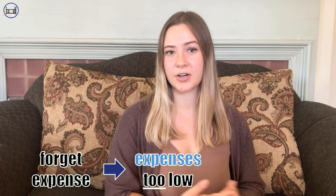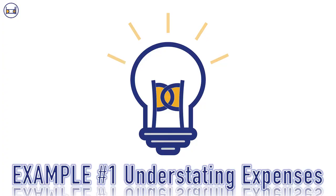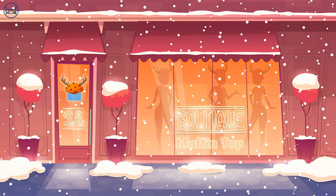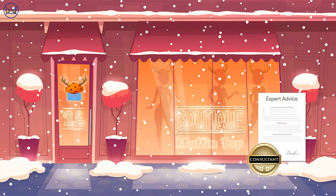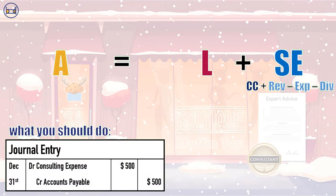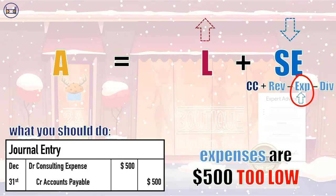The first kind of adjusting entry mistake is to understate expenses. When companies fail to report an expense, they report a lower value for their expenses than they actually incurred, causing net income to appear higher than it actually is. This can happen for a couple of reasons. First, the company could forget to record an expense. Let's look at a company called Muffin Top, which makes clothing to help moose survive our harsh Canadian winters. Perhaps the company got advice from a fashion consultant and haven't yet received the bill for her services. Muffin Top has used up the value of this service, so they should report an expense by debiting consulting expense, say for $500, and crediting accounts payable for $500. But if Muffin Top forgets to do so, then its expenses at the end of the year will be $500 lower than they actually should be.